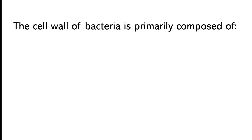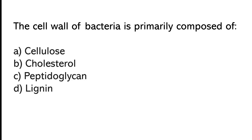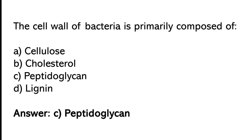The seal wall of bacteria is primarily composed of: cellulose, cholesterol, peptoglycan, or lignin. The correct answer is option C. The seal wall of bacteria is primarily composed of peptoglycan.